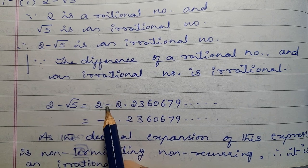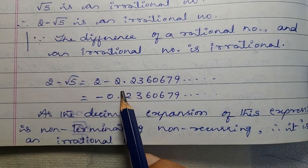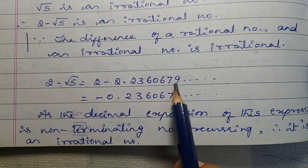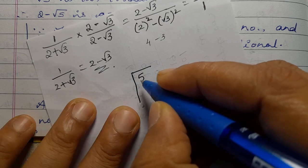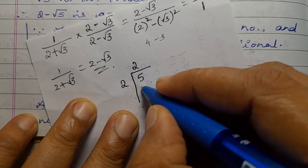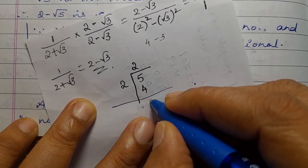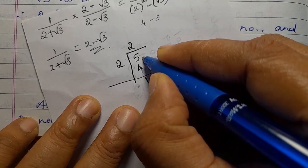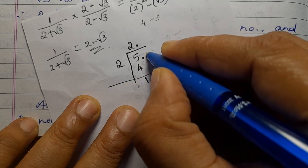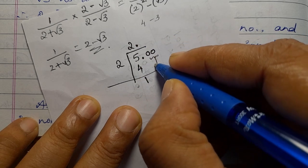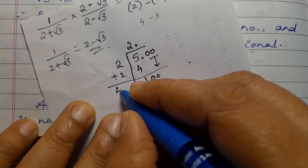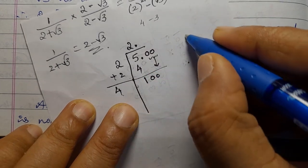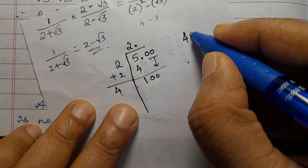2 minus square root of 5. Square root of 5 is 2.2360679, etc. So we compute 2 minus square root of 5.